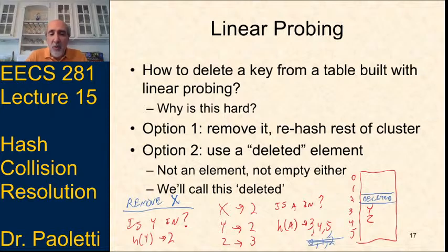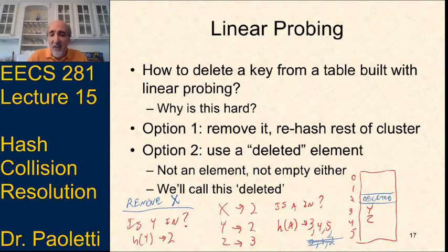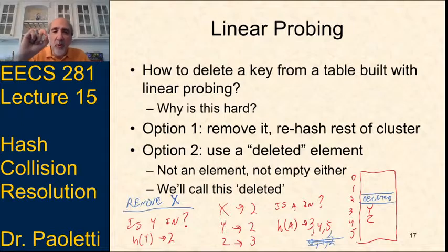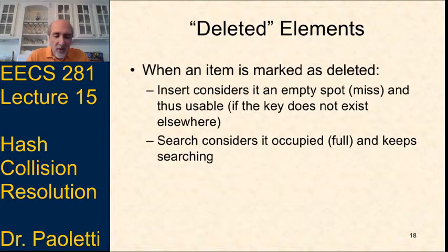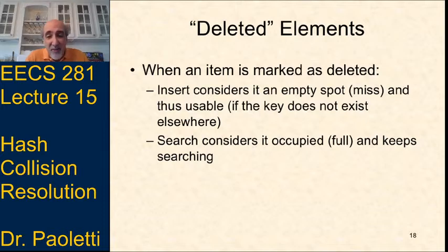We need to distinguish three states for each bucket: a location that currently holds something (occupied), a location that has never held anything (empty), and a location that used to hold something but doesn't anymore (deleted). For insertion, a deleted location is treated like an empty spot — it's usable if the key doesn't exist elsewhere. For search, however, a deleted location is treated as full and we keep searching.